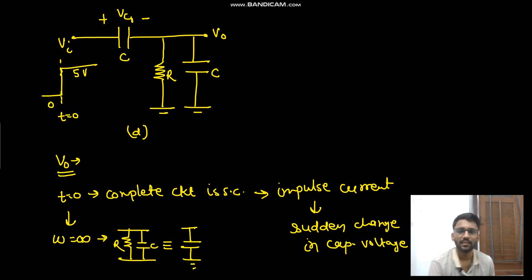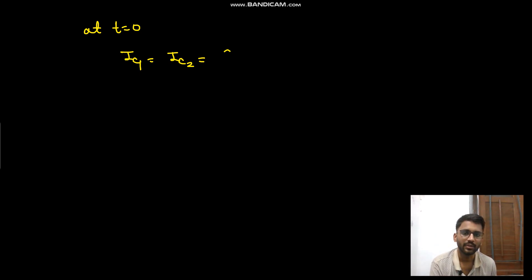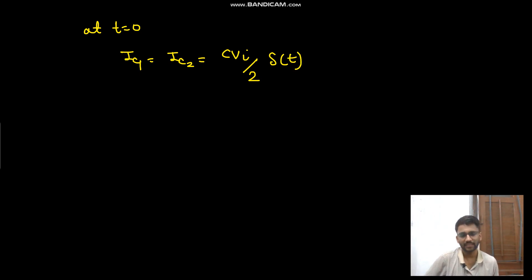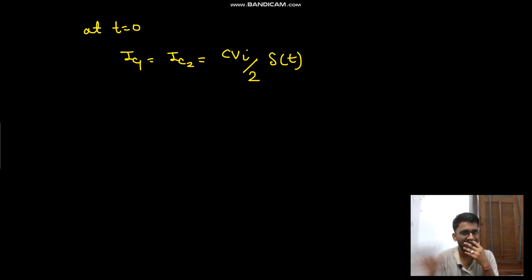Now talking about the currents — we need to find ic1, ic2, and ir. At t equals to zero, both ic1 and ic2 will be equal because there is a sudden change of voltage v_in/2 in both capacitors. So it would be C × (v_in/2) / Δt. The change in charge is C × (v_in/2) and it is happening in no time, so the current is C × (v_in/2) / Δt.